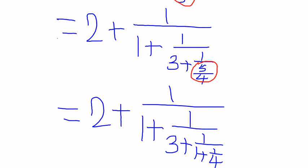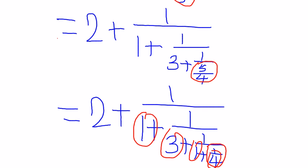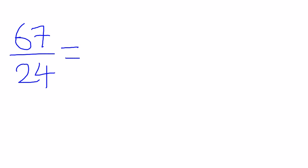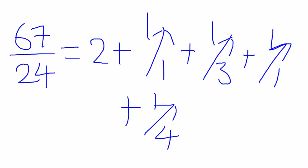Now the steps are all finished because the final bottom right fraction has 1 as the numerator. Please look at the coefficients here. I believe you know how to write down the final form of the continued fraction of the original fraction 67 over 24. Please note that it has 2 as the integral part — you need to single it out. And the remaining things are the same as your original calculation. So we have this one as the final answer.